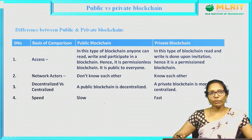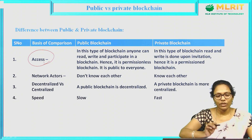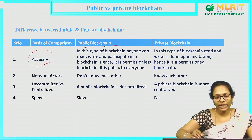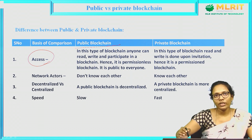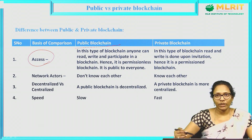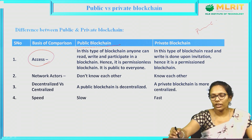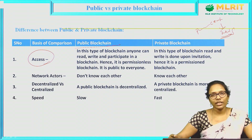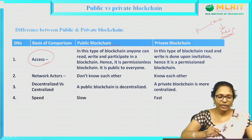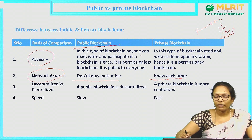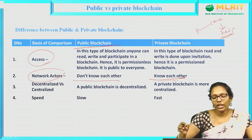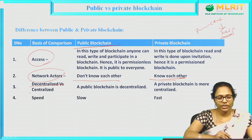Coming to the differences between public and private blockchain based on access: in public blockchain, anyone can read, write, and participate. But in private blockchain, access is controlled by a central authority or upon invitation — the principal can give permission to HODs to validate, read, or write transactions. Regarding network actors: in public blockchain, anyone can access and participate, so participants do not know each other. But in private blockchain, there are only limited nodes and everyone knows each other.